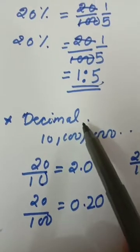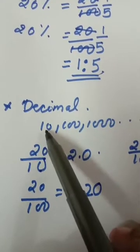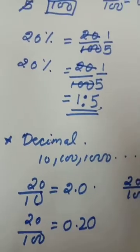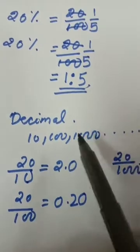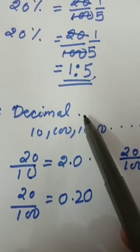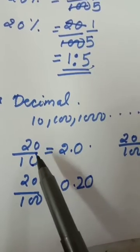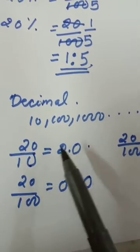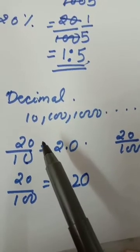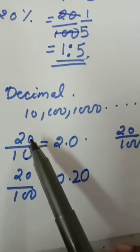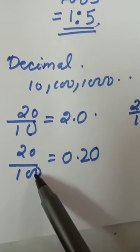Next is decimal. When will you get a decimal? When you divide a number by 10, 100, or 1000, you will get a decimal form. 20 divided by 10: how will you divide? From the right side, you take 1 digit and before it you put a point. 20 — I take 1 digit and put a point before it. If you want to divide by 100, you take 2 digits from the right side and put a point before them.